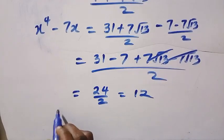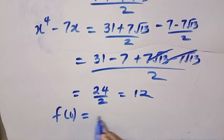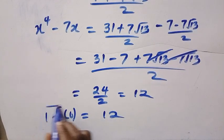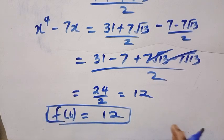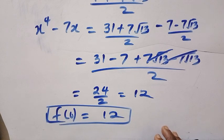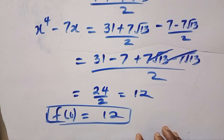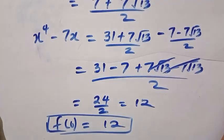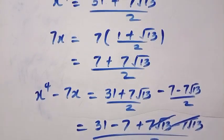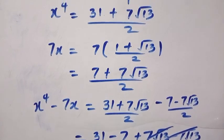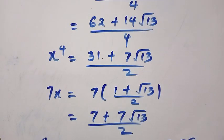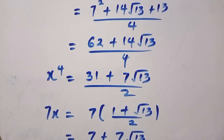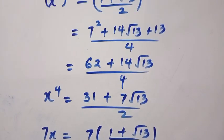Therefore, f of 0 equals 12. This is how I solve this using another method. Which one do you prefer? Do you have any other method of solving this? You can drop it in the comment box. Don't forget to subscribe to this channel. Share your thoughts, and see you in the next video. Never stop learning — those who stop learning, stop living. Bye-bye.